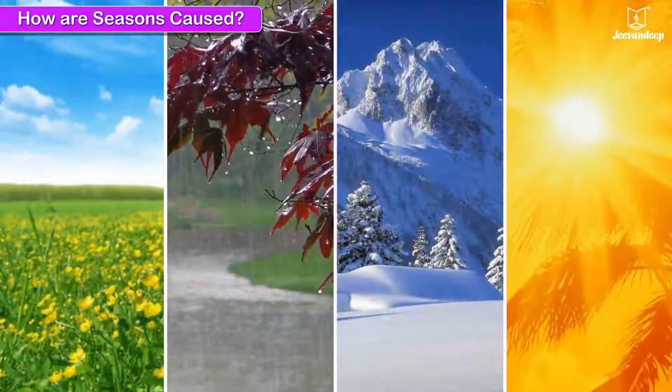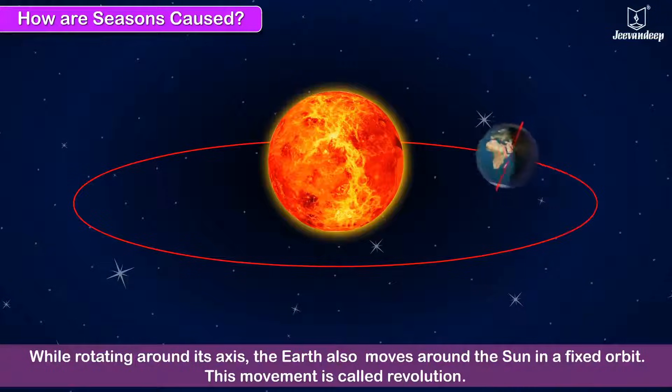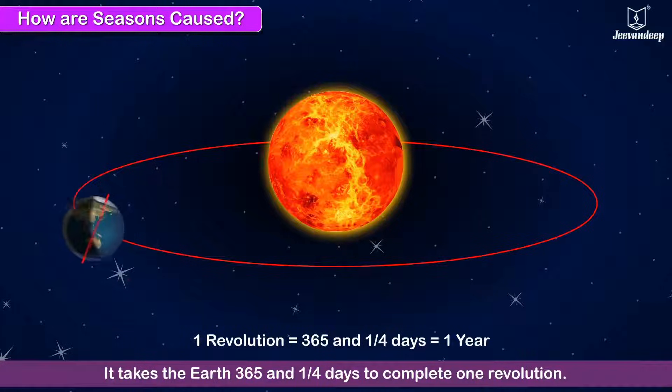How are seasons caused? While rotating around its axis, the Earth also moves around the Sun in a fixed orbit. This movement is called revolution. It takes the Earth 365 and one-fourth days to complete one revolution, which is called a year.